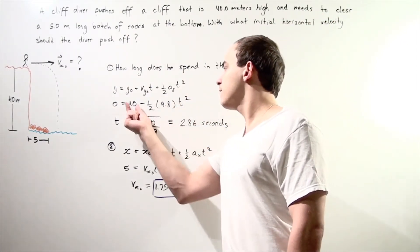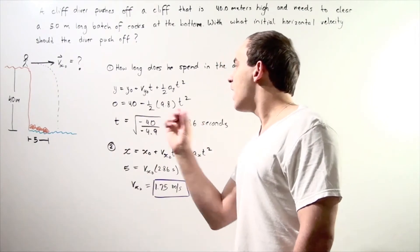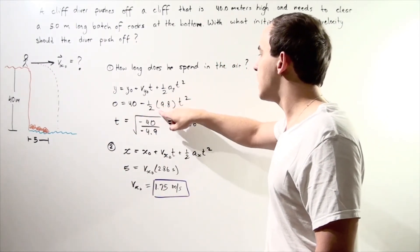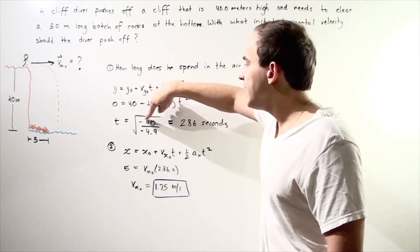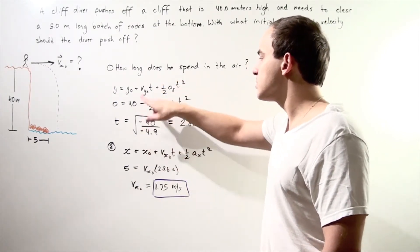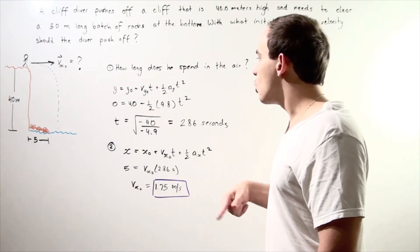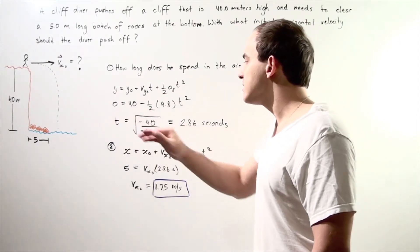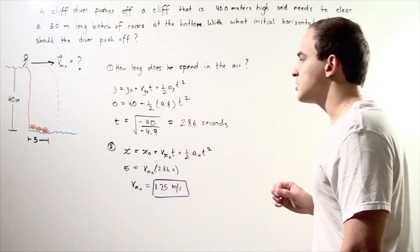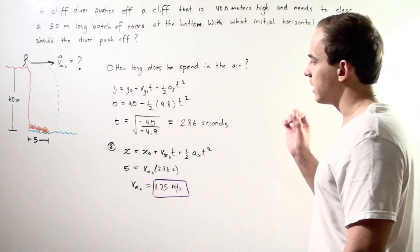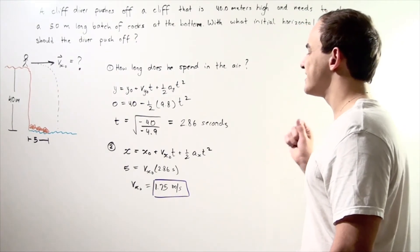We bring the 40 to one side. We divide both sides by 1 half times 9.8, which is 4.9. And notice that we have a negative on top, negative on the bottom, so that becomes positive. In order to get the t on one side, we simply take the radical of both sides and we get the following results. Our time is approximately 2.86 seconds.